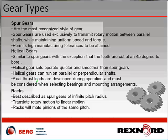Spur gears make a characteristic whine at high speeds and are used for low-speed applications where noise control is not a problem. Helical gears are indicated for high speeds, large power transmission, or where noise abatement is important. A disadvantage of helical gears is the resultant thrust load along the gear axis, which requires appropriate thrust bearings, and there is a greater degree of sliding friction between meshing gears.